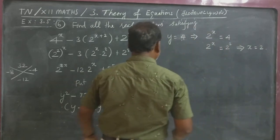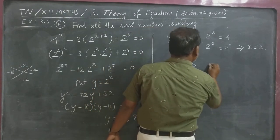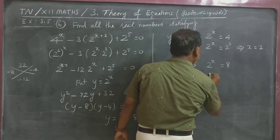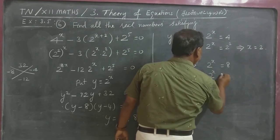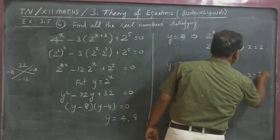And then, Y equal to 8. Y equal to 8 implies 2 power X is equal to 8, that is 2 power X is equal to 2 cube. So X is equal to 3.